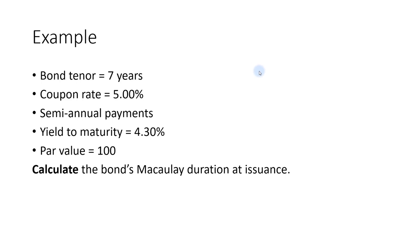In this video, I'm going to show you four ways to calculate the Macaulay duration. We'll be using an example where the bond has a tenor of seven years, the coupon rate is 5% per year, but the bond is semi-annually paid. The yield to maturity is 4.3% in annualized terms, and we'll be using a par value of 100. From this, we'll calculate the bond's Macaulay duration at issuance.